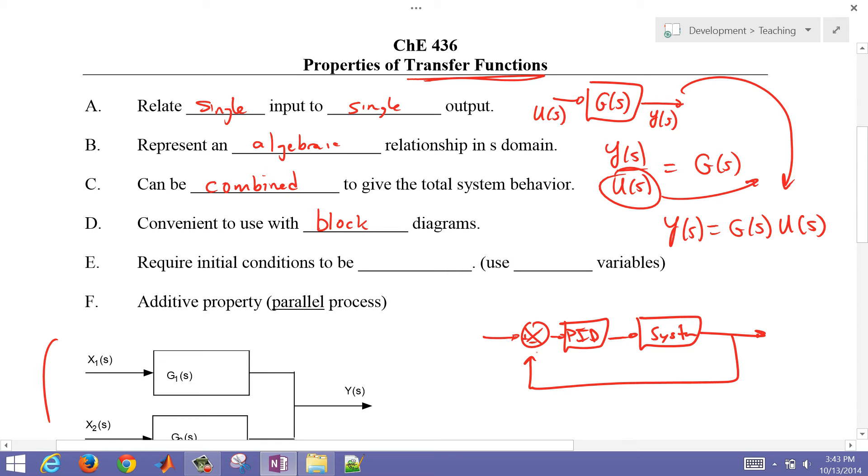They also require the initial conditions to be zero, and we need to use what are called deviation variables. So deviation variables are required in this case.